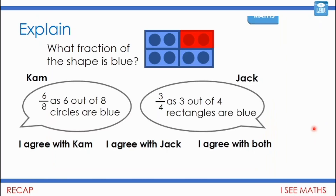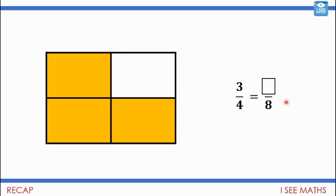On Friday we were looking at equivalent fractions — fractions that are the same but written in different ways. We had a look at this example: Cam says six-eighths of this shape are blue because six out of eight circles are blue, and Jack said three-quarters is blue because three out of four rectangles are blue. We agreed with both of them because six-eighths and three-quarters are actually equivalent. Then we looked at the difference in the part and the whole.